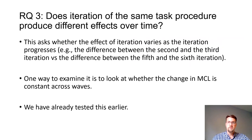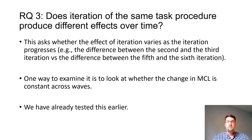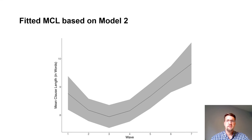In Model 4, the mean posterior distribution of the absolute difference score for phi was minus 0.76, indicating that a larger change in mean clause length was associated with larger dispersion. Turning to our final research question, we were interested in whether iteration of the same task procedure produces different effects over time — whether the effect of iteration varies as the iteration progresses. Going back to Model 2, the change in mean clause length between waves is not constant; mean clause length only starts increasing at around Wave 3. This suggests that it takes a few task iterations for learners to benefit from it, at least insofar as mean clause length is concerned, though we admit this remains somewhat speculative.